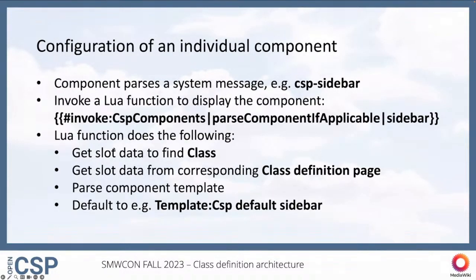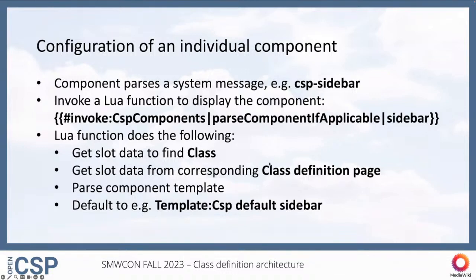For the subheader, sidebar, and footer components, we have configured these so that they parse a system message. For example, for the sidebar, the system message is called cspsidebar. The system message invokes a Lua function, which does the following: it gets the slot data from a page to find out what class it has. If there's no class in the slot, it doesn't do anything. But if there is a class, it will find the corresponding class definition page and get slot data from that as well. If a sidebar template is defined there, that template will be parsed — otherwise it falls back to the default, for example the template csp_default_sidebar.